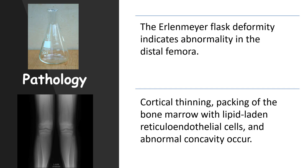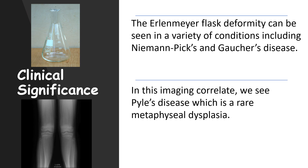The Erlenmeyer flask deformity indicates abnormality in the distal femoral, cortical thinning, packing of the bone marrow with lipid-laden reticuloendothelial cells, and abnormal concavity occur. The Erlenmeyer flask deformity can be seen in a variety of conditions, including Niemann-Pick's and Gaucher's disease.